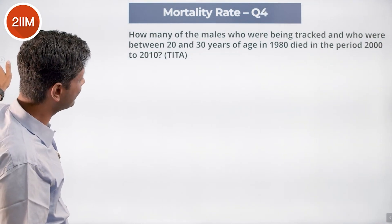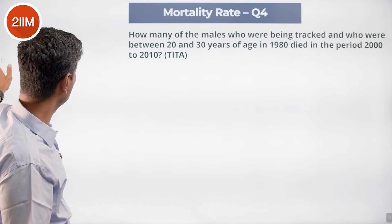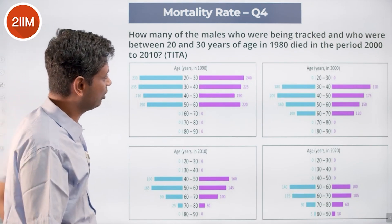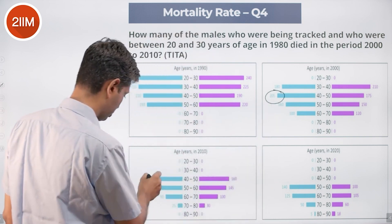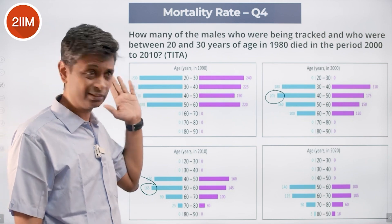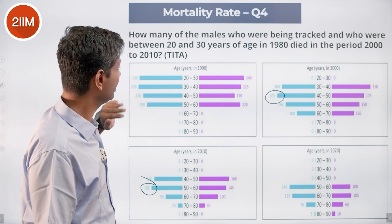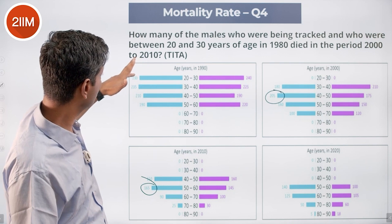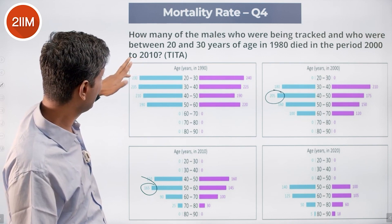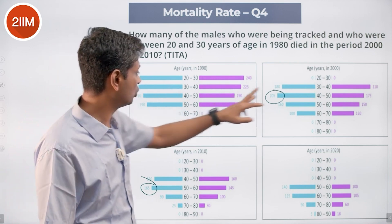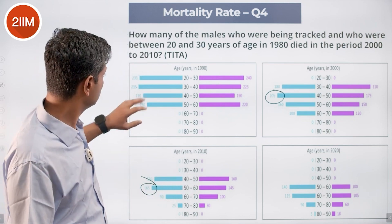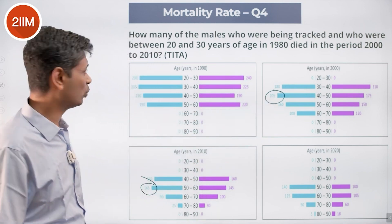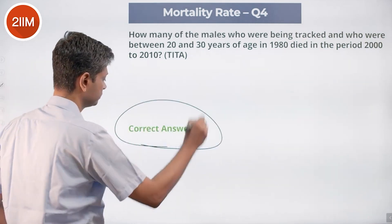How many of the males being tracked who were between 20 and 30 years of age in 1980 died in the period 2000 to 2010? The 20 to 30 group in 1980 corresponds to the second bucket. It was 250 in 1980, became 230 in 1990, became 205 in 2000, became 165 in 2010. They're looking for the transition 2000 to 2010: 205 to 165, so 205 minus 165 is 40. Nice and simple — just look at the data and write the answer.